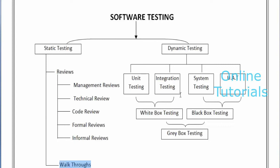White box testing — why they have given this name — is because the testing is done on the source code directly. If you are getting any defects, it is very easy to rectify the problems because you are seeing the source code. Developers will do that; we testers are not going to be involved in white box testing. Since testing is done directly on the source code — it's clear — that's why they gave it the name white box, or clear box, or glass box testing.